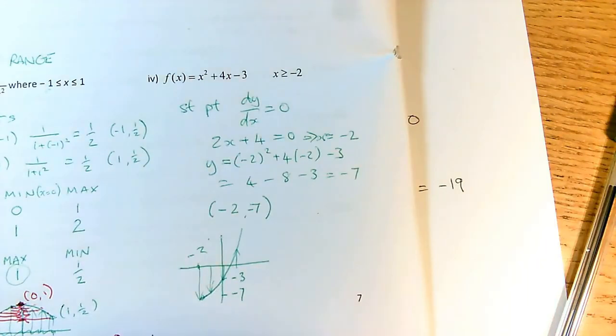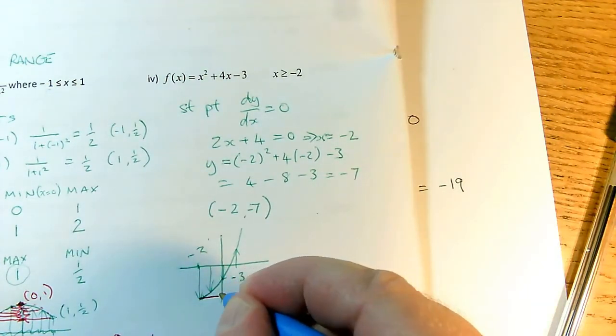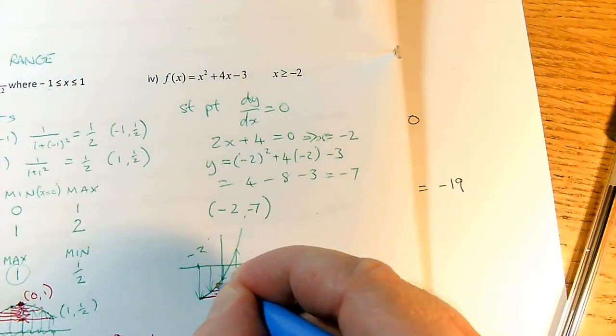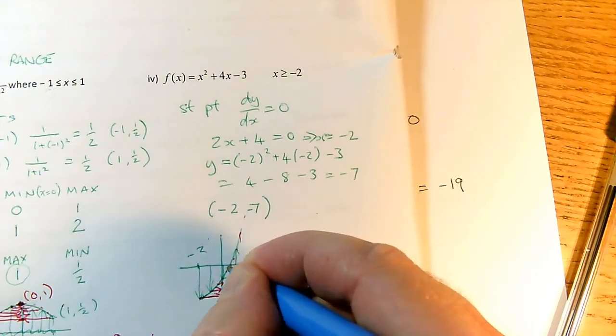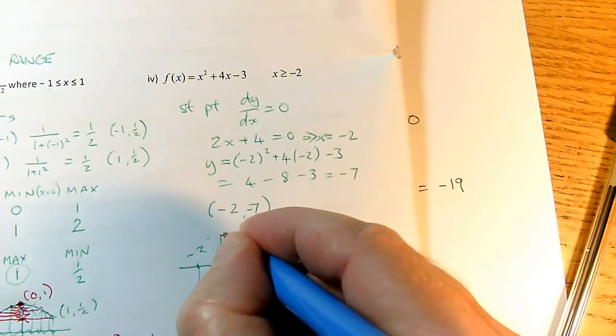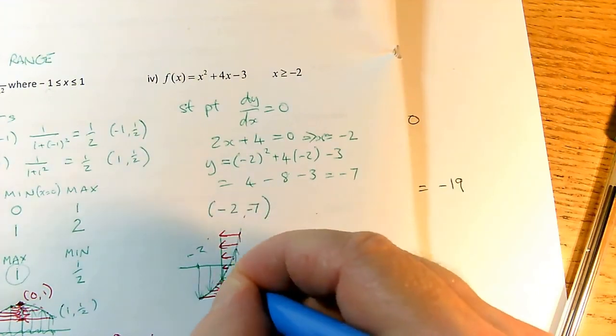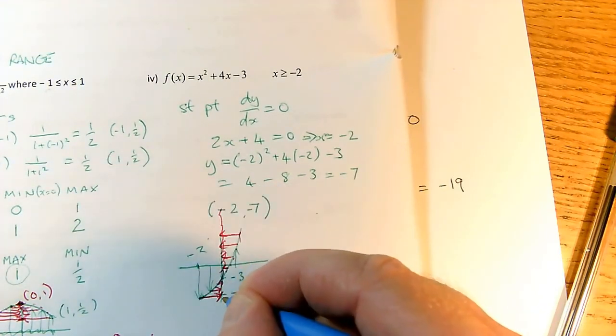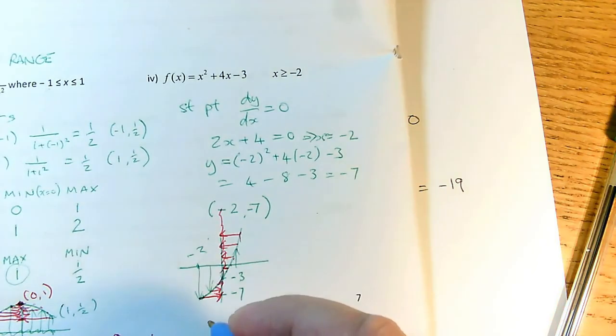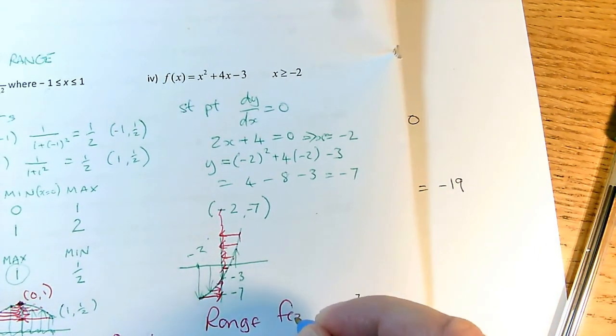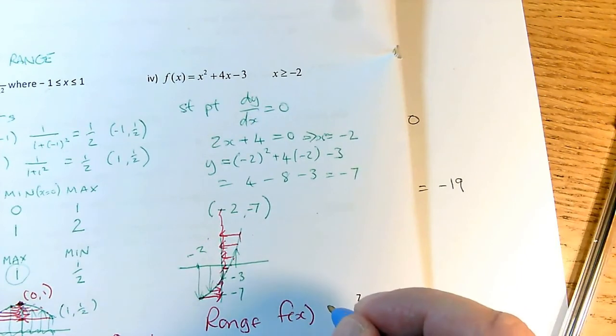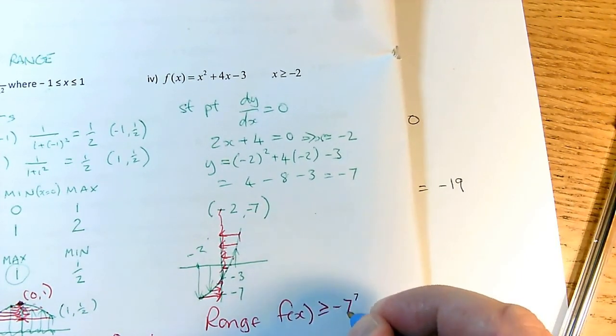But on the y-axis, the only y values I can get, I can get this minus 7 here, and then I can get, for the other points on the curve, I can get these other points on the y-axis. And the more I keep going, the more of the y-axis I get that way, but I can't get any y values of less than minus 7. So the range of this one is that f of x, don't call it y, call it f of x, has got to be greater than or equal to minus 7, and I am done.